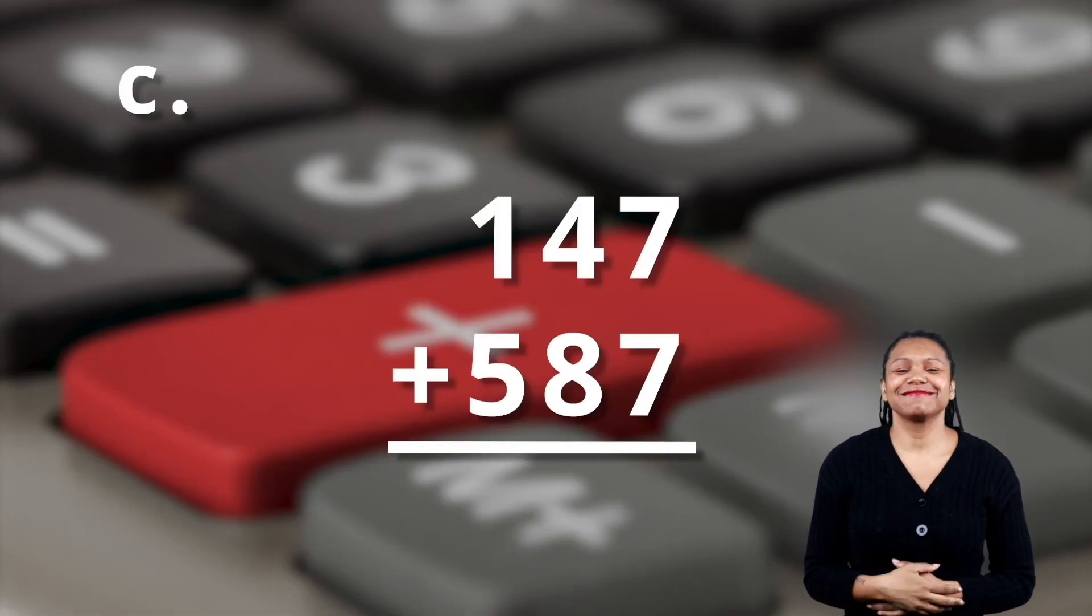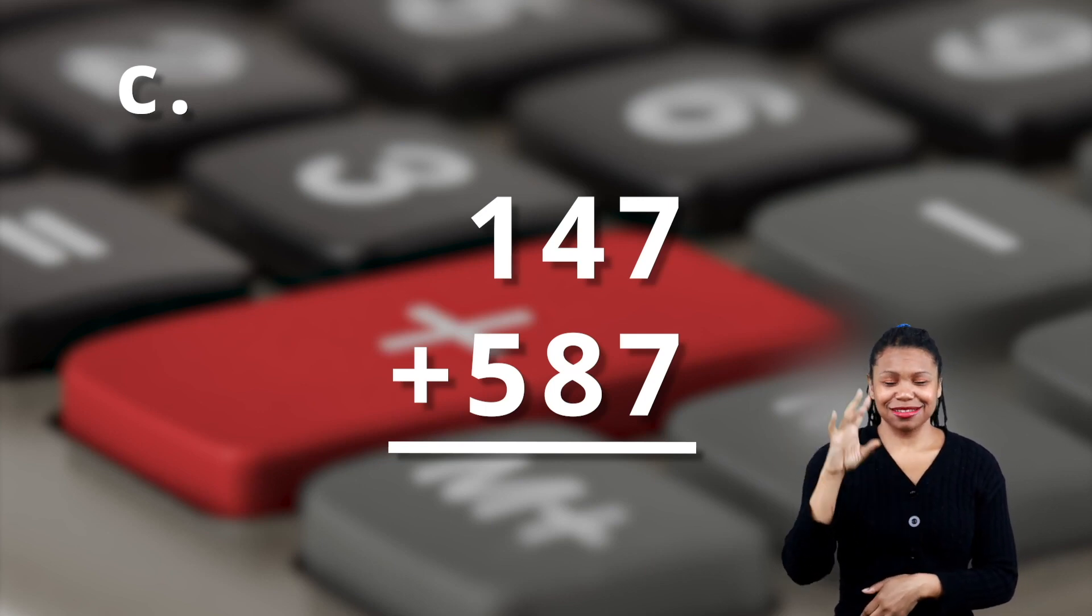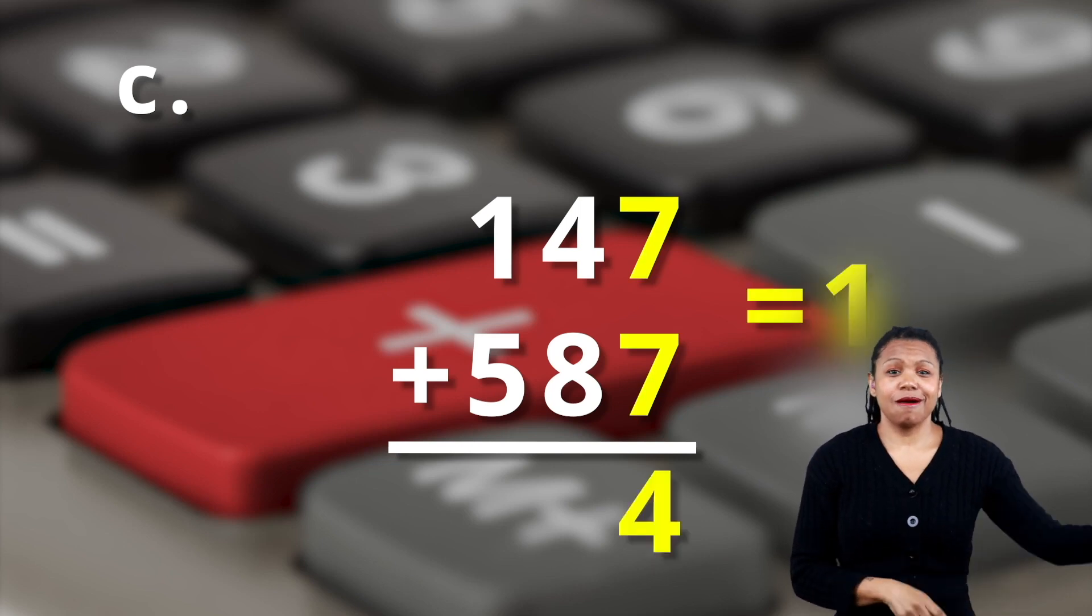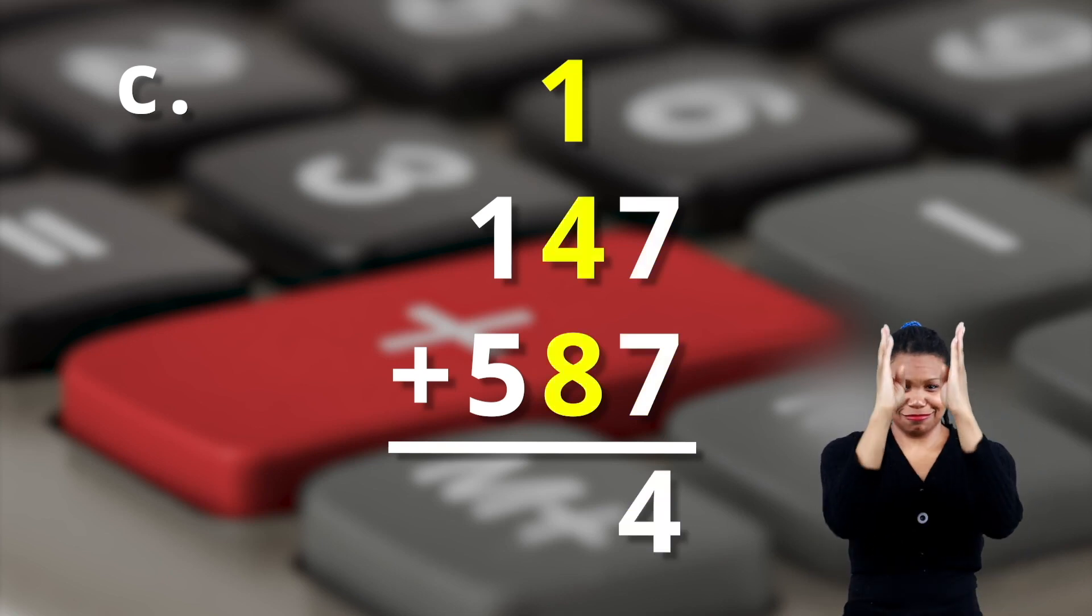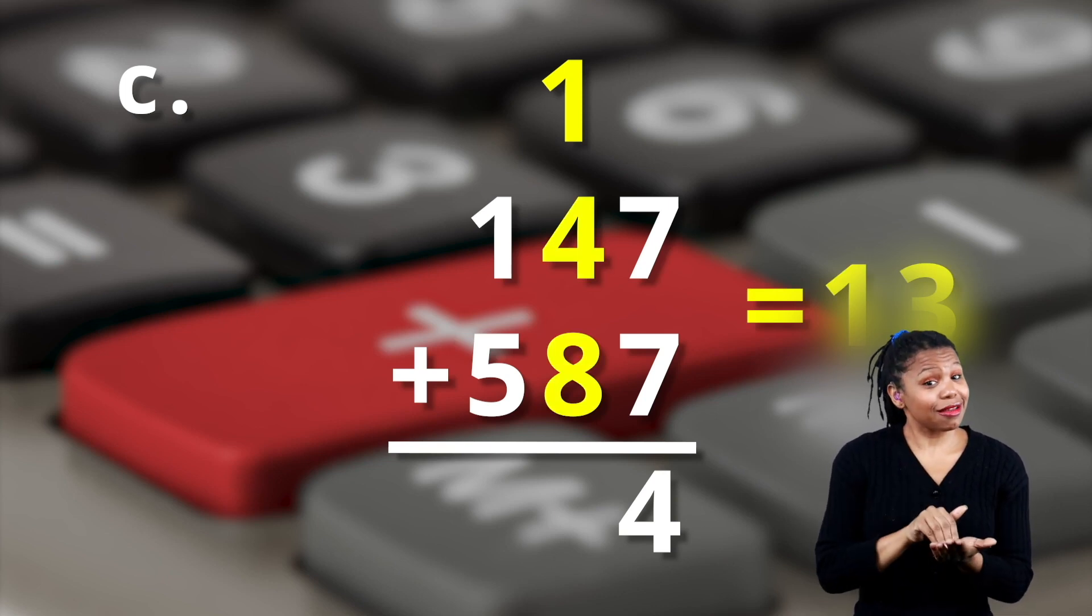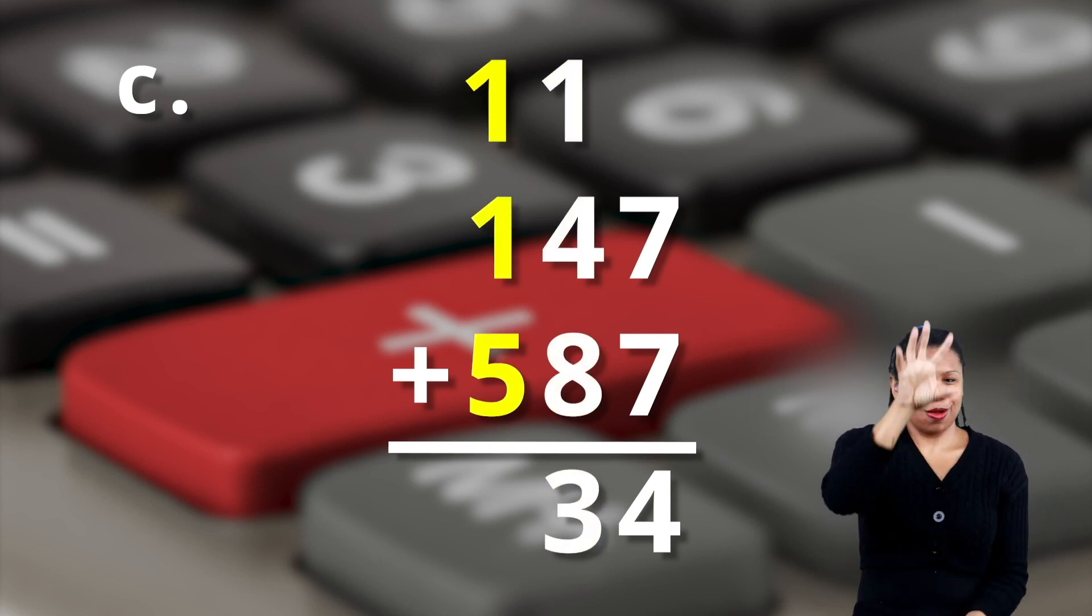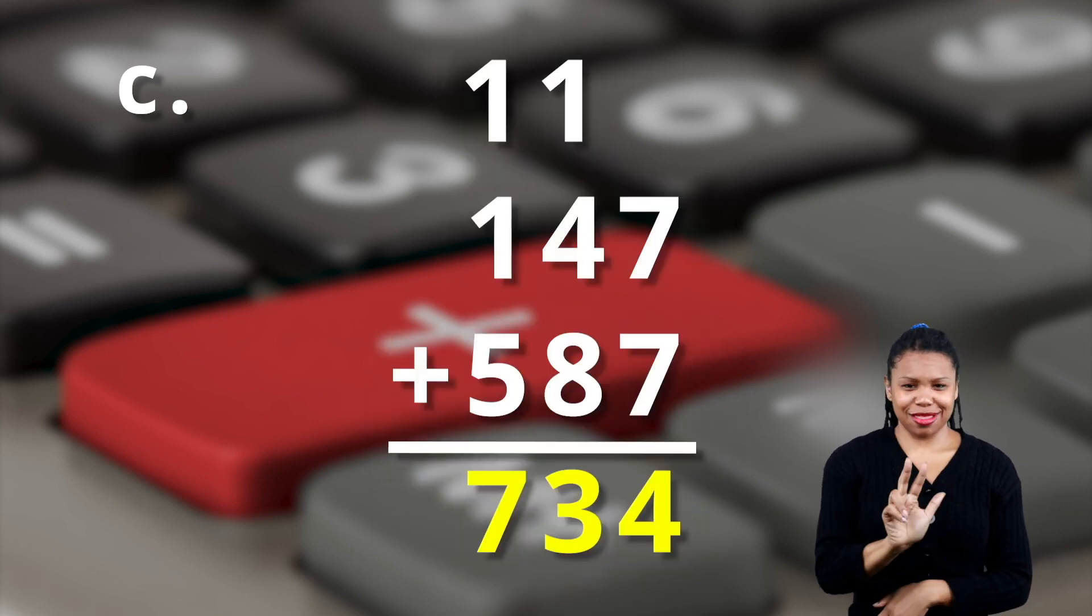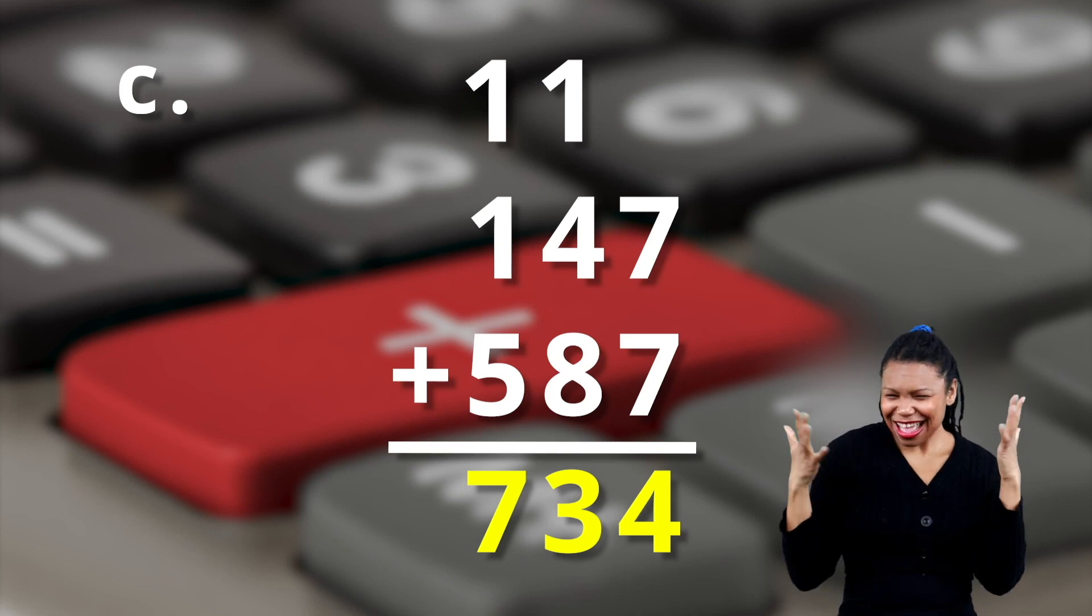Welcome back. Let's see how you did. One forty-seven plus five eighty-seven. So you've got the seven plus the seven is fourteen. So the four goes in the ones column. Carry the one up to the tens column. So you have one plus four plus eight, which is thirteen. The three goes down. And a one goes up in the hundreds column. And you have one plus one plus five is seven. So it's seven hundred and thirty-four. Did you get it? I knew you could do it. Well done.